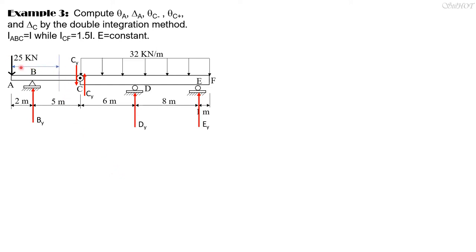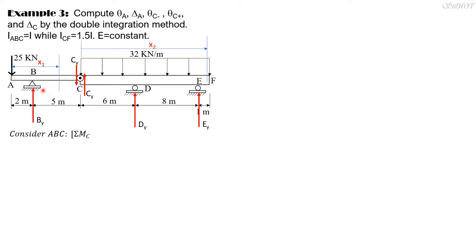This is for setting up the differential equation of the elastic curve. We call the coordinate x1, with origin for ABC at A. For CDEF, the origin is C, with coordinate x2. Considering ABC, we sum moments about C to solve for By. Taking clockwise as positive: By times 5 equals 25 times 7, so By equals 35 kN upward.